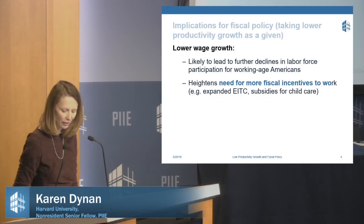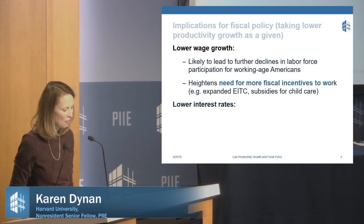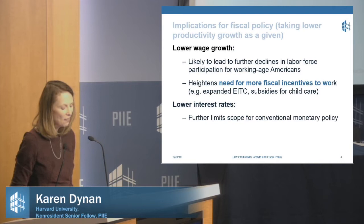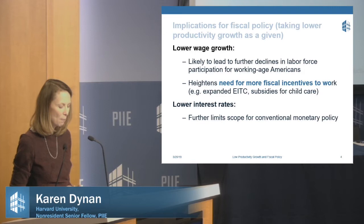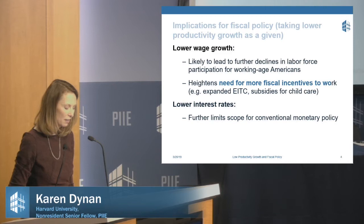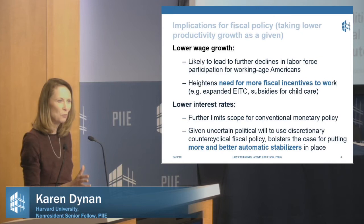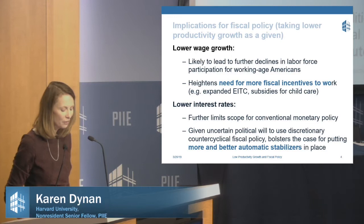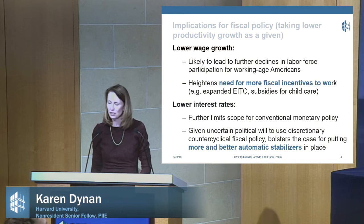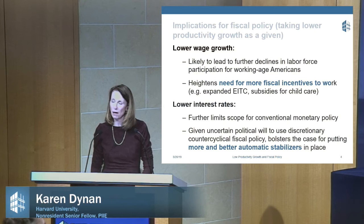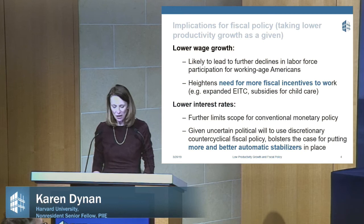Lower interest rates do have a mitigating effect on the budget, but they also affect the scope for counter-cyclical monetary policy. With the Fed up against the zero lower bound, lower interest rates mean conventional monetary policy will be even more limited than it already is. This makes the argument for fiscal policy to do more of the heavy lifting on counter-cyclical policy. One lesson of recent years is that political will has been an obstacle to using discretionary counter-cyclical fiscal policy, so what we need is more and better automatic stabilizers in the system.